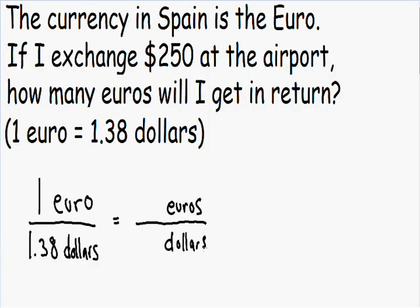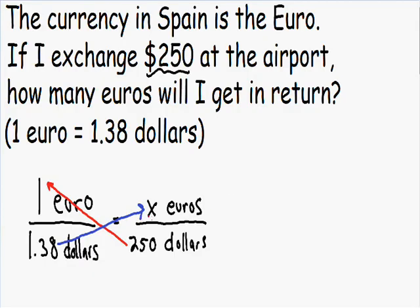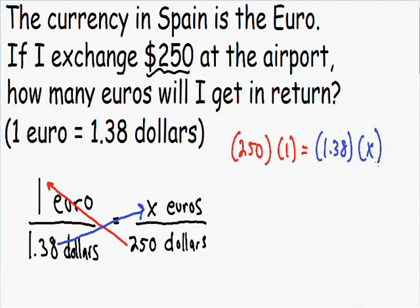Going back to what we're solving for: we have 250 dollars at the airport, so 250 dollars goes in the denominator. We don't know how many euros we'll get, so we call that x euros in the numerator. Now we just need to solve for x by cross multiplying: 250 times 1 and 1.38 times x. In red, 250 times 1 is just 250. In blue, 1.38 times x is 1.38x.